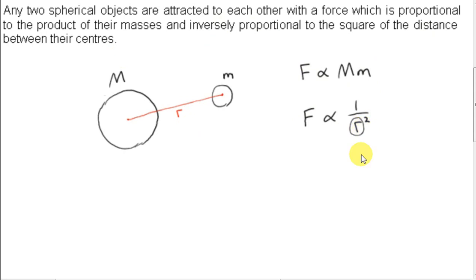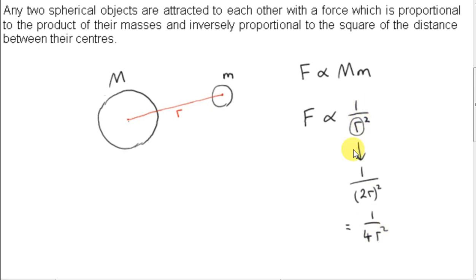If we replace r with two r — if we double the distance between the centers of the two spherical masses — what happens to the force? Replacing r with two r, this works out to one over four r squared. How does one over four r squared compare to one over r squared? The gravitational force has gone down by a factor of four. So doubling the distance between the centers of the masses has the effect of reducing the force by a factor of four — the force that we get is only a quarter of what it was.